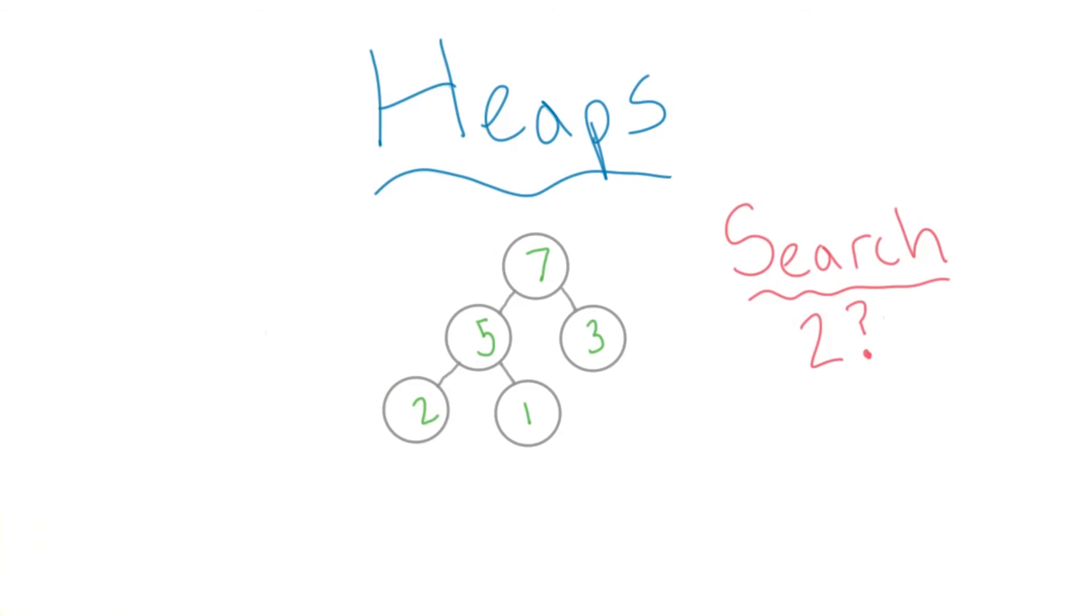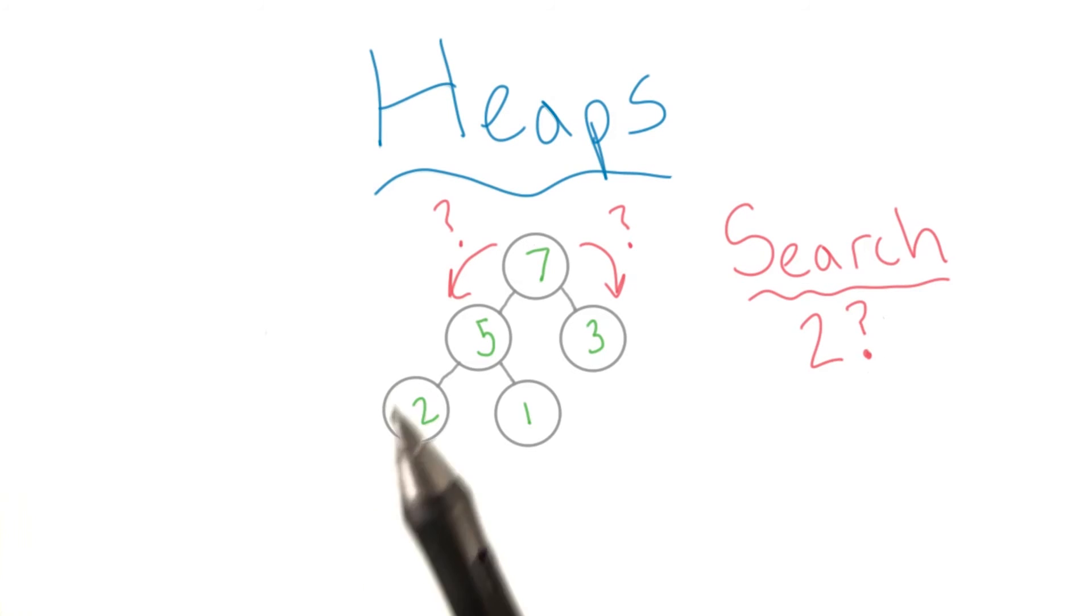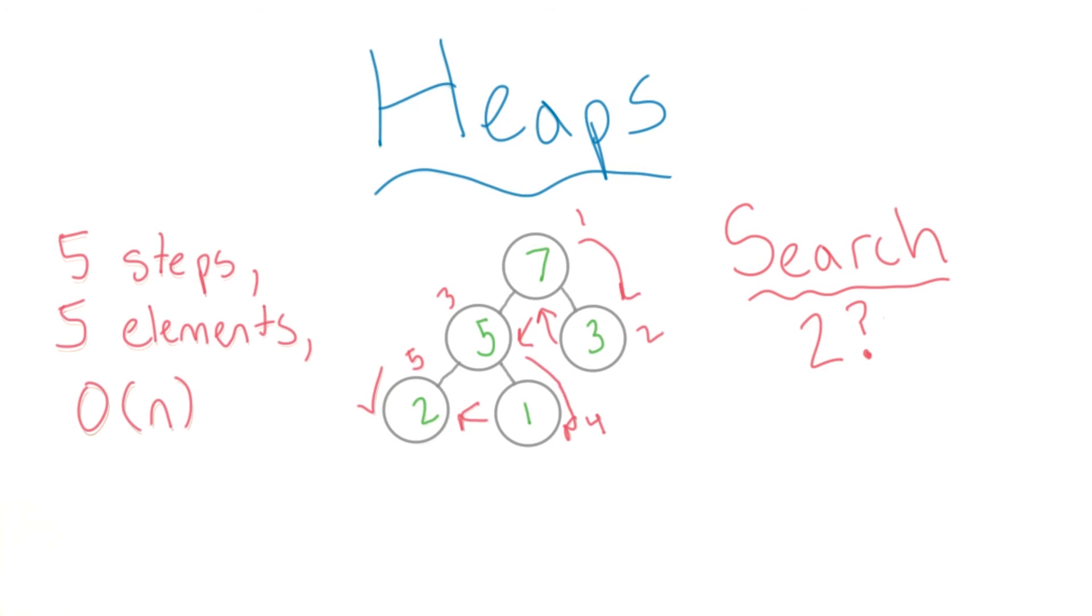Alright, let's see what search looks like. Should we start our search by going to the left or the right? In a BST, we knew which direction to go at each step by doing comparisons. Here, there's no guarantee either way. Thus, searching ends up being a linear time operation, since normally we can't rely on tricks and we'll end up searching the entire tree.